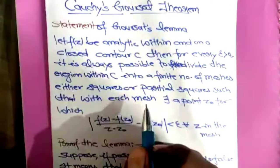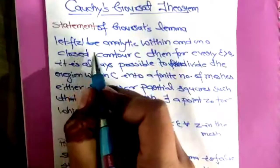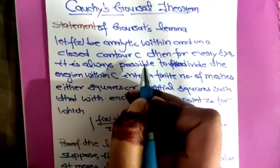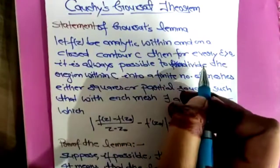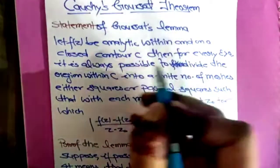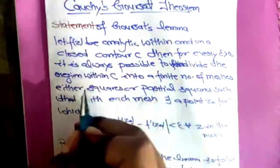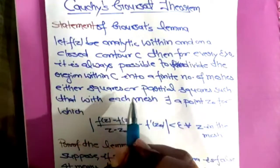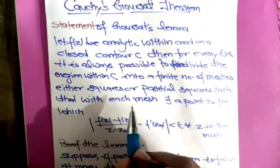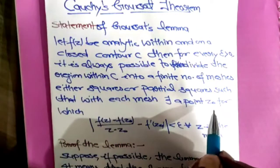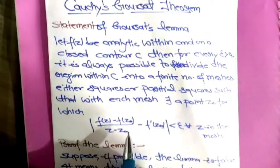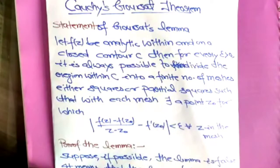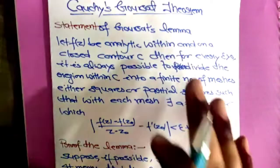What is the statement of the lemma? Let f(z) be analytic within and on a closed contour C. Then for every epsilon greater than 0, it is always possible to divide the region within C into a finite number of meshes, either square or partial square, such that within each mesh there is a point Z0 for which f(z) is differentiable. I will make you understand what is the meaning of this statement.